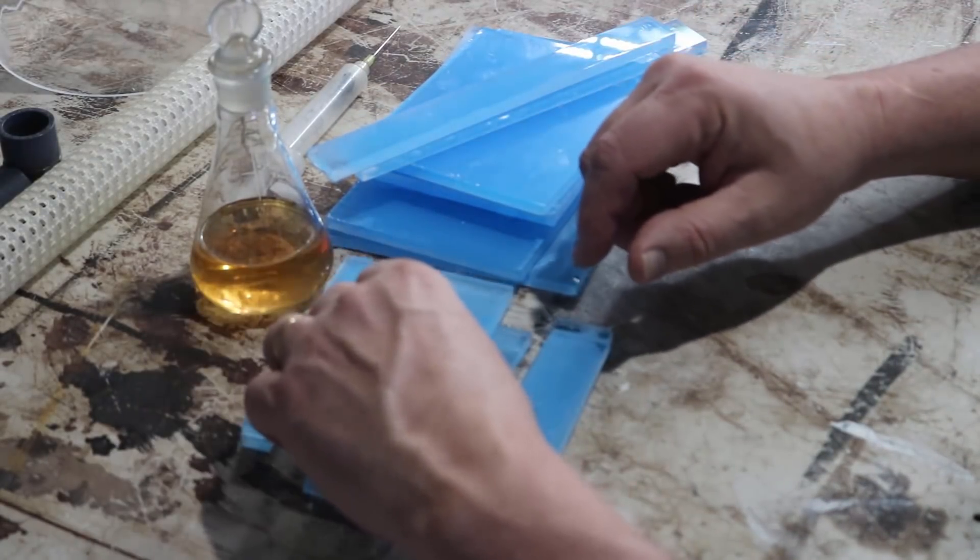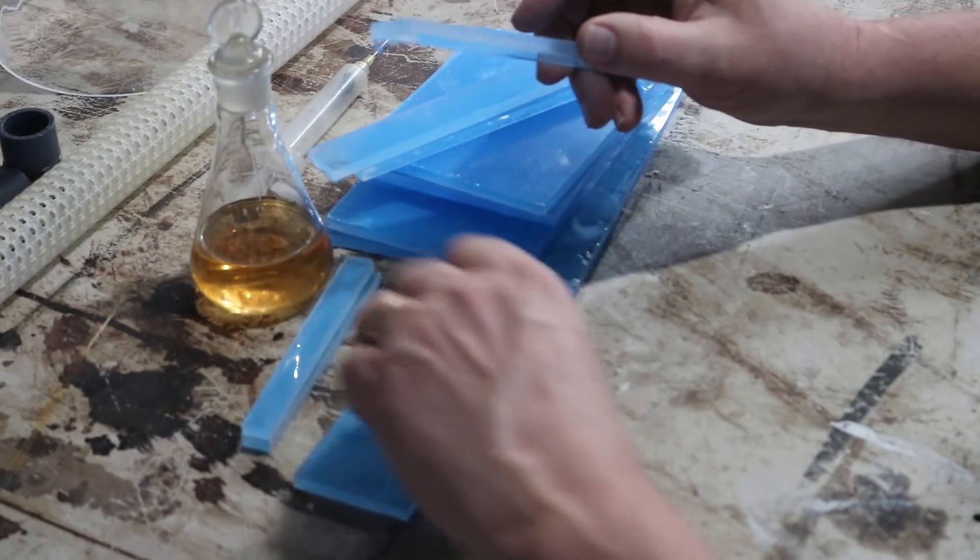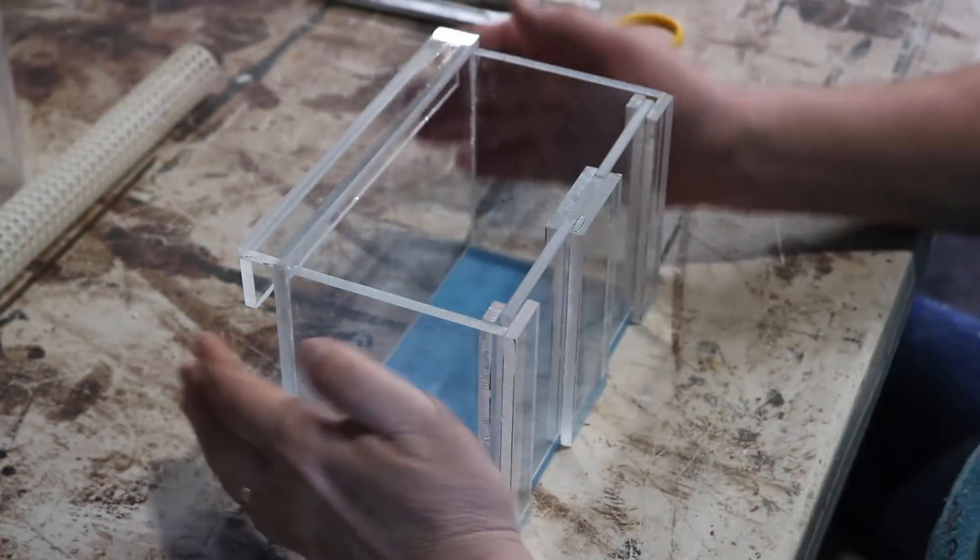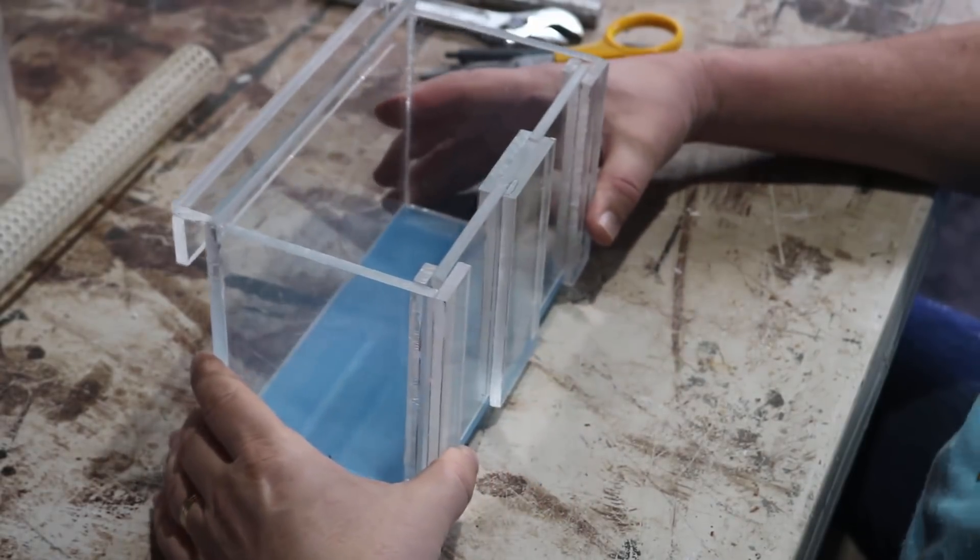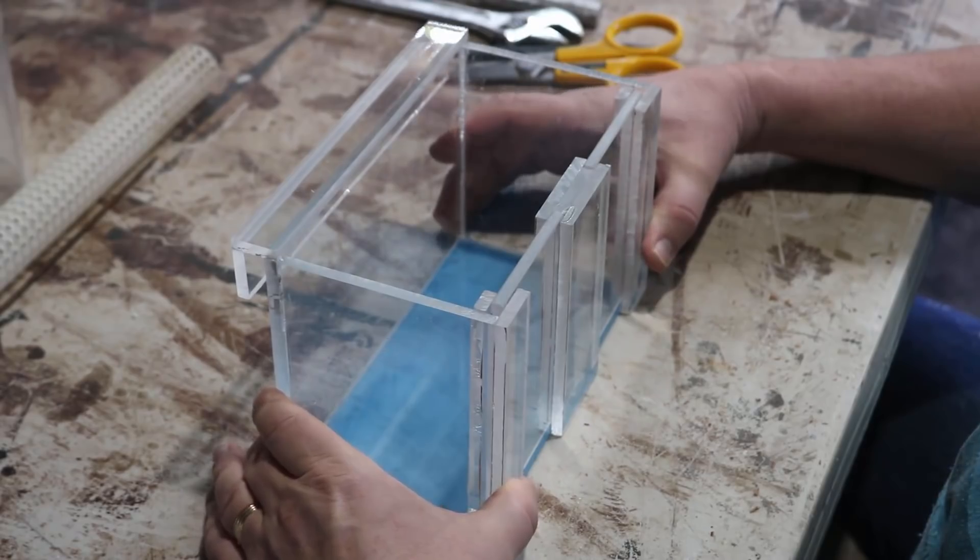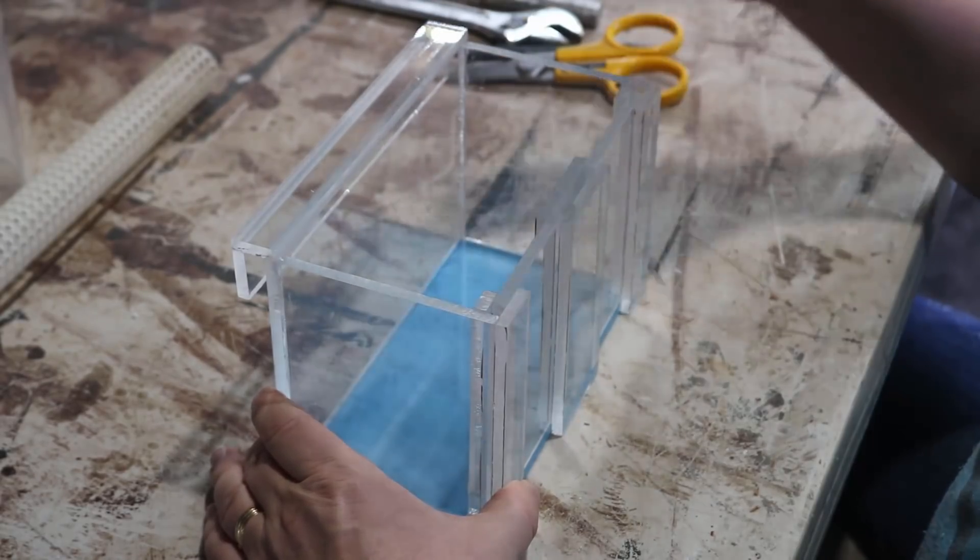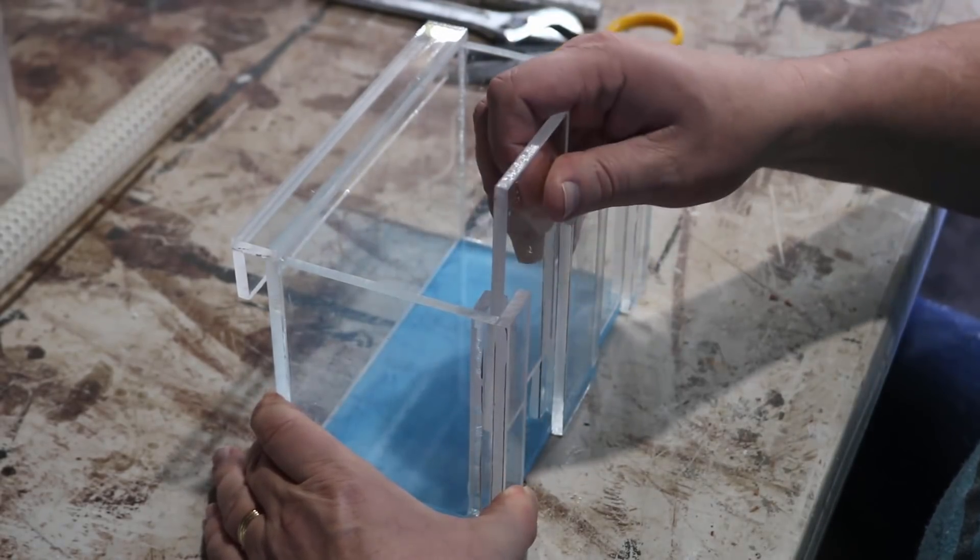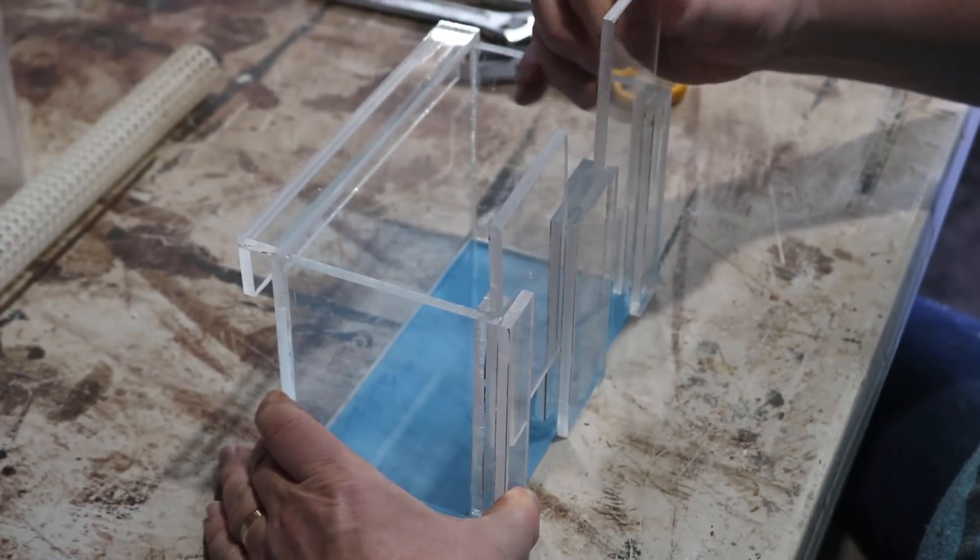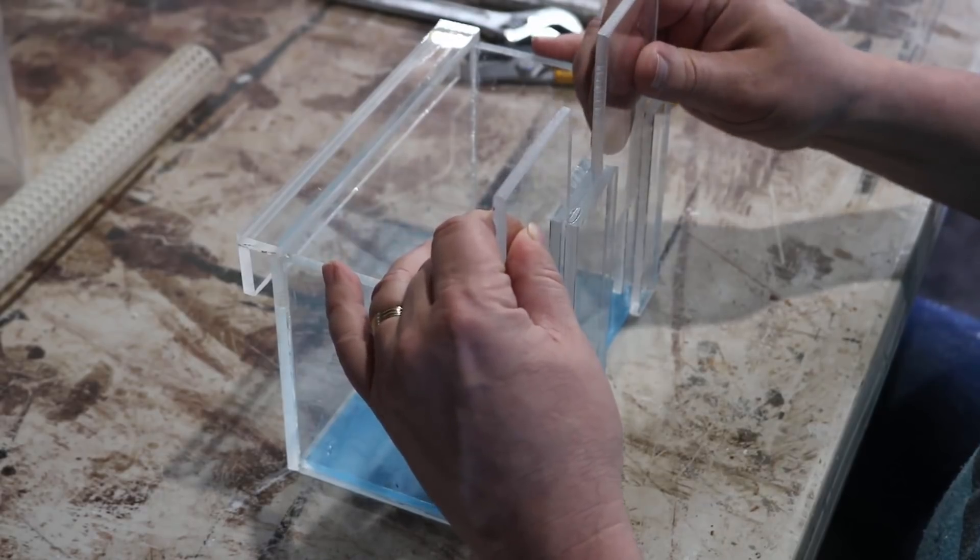I've cut up the acrylic. This is not going to be for the actual filter part, believe it or not. This is going to be a box, and I won't show you the gluing together process because you've seen it so many times. But this is going to sit inside the aquarium. And the purpose of this is to get around the most annoying aspect I've found about diatom filters, and that is the charging process. Getting the actual diatom powder into the filter where it belongs.